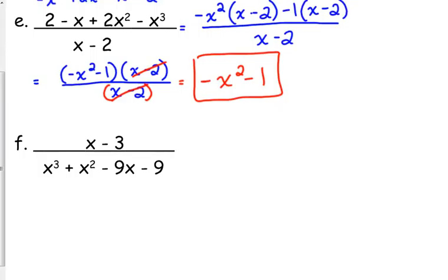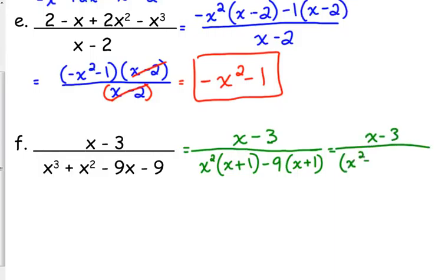Let's do one more example here with grouping, f. The numerator, there's no factoring to be done. Sometimes that happens as well. Sometimes it's just kind of along for the ride, and you're focused on the other part. The denominator, the GCF of the first two terms is x squared. When we take that out, we're left with x plus 1. The GCF of the second pair is negative 9. When we take out a negative 9, we're left with x plus 1. Let's fix our grouping. Put our GCFs together. Our common factor.